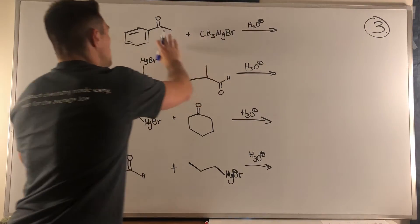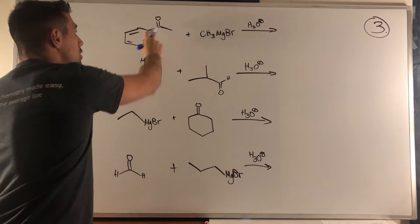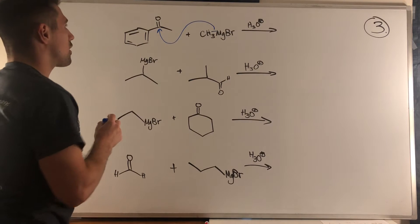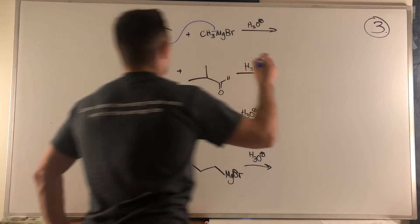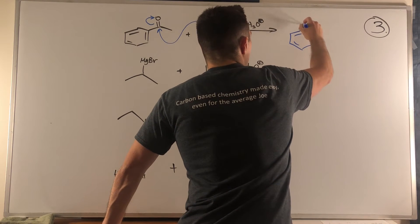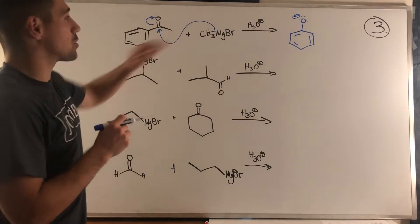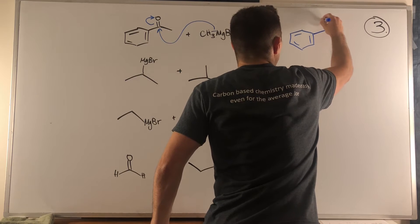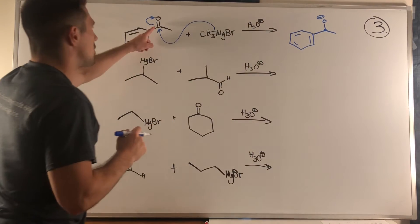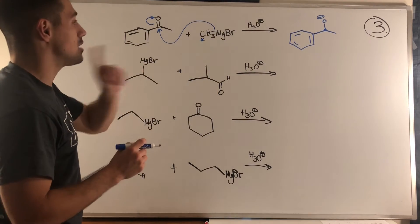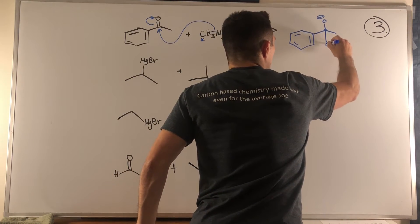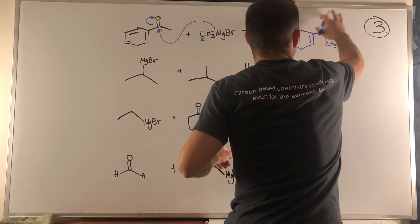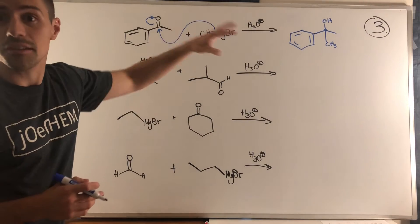In the first problem we have methyl Grignard and a ketone. The nucleophilic Grignard attacks that electrophilic carbonyl carbon — electrons kick up onto oxygen. I like to draw the O− first, mark the attacked carbon as my dot carbon, then show that I'm coming in with the one-carbon methyl group to the asterisk carbon. I've connected my carbon pieces, and after acidic workup the O− picks up H+ to give a neutral alcohol product.